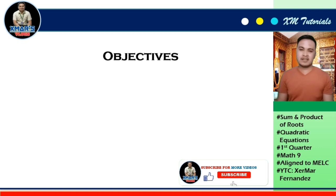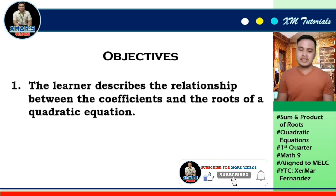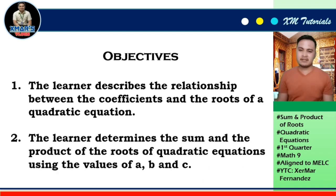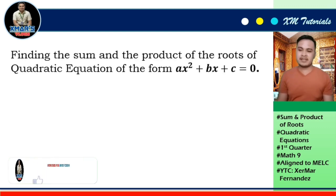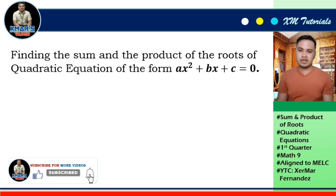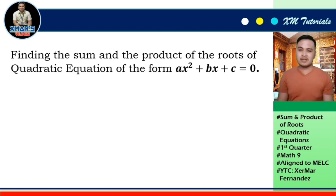Our objectives are: the learner describes the relationship between the coefficients and the roots of a quadratic equation, and the learner determines the sum and the product of the roots of quadratic equations using the values of a, b, and c. Here we go — finding the sum and the product of the roots of a quadratic equation of the form ax² + bx + c = 0.